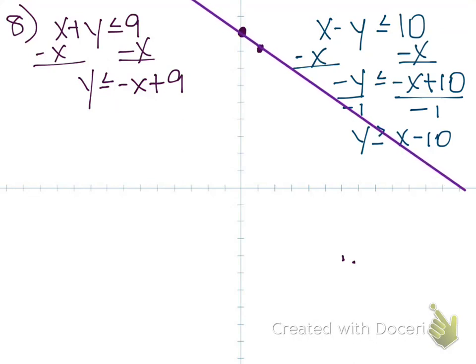Because it's down 1, right 1. Because remember, slope is rise over run. So since my slope is negative 1, that's negative 1 over 1. So that means I go down 1, right 1. Because the negative 1 tells me to go down. And the positive 1 tells me to go to the right.